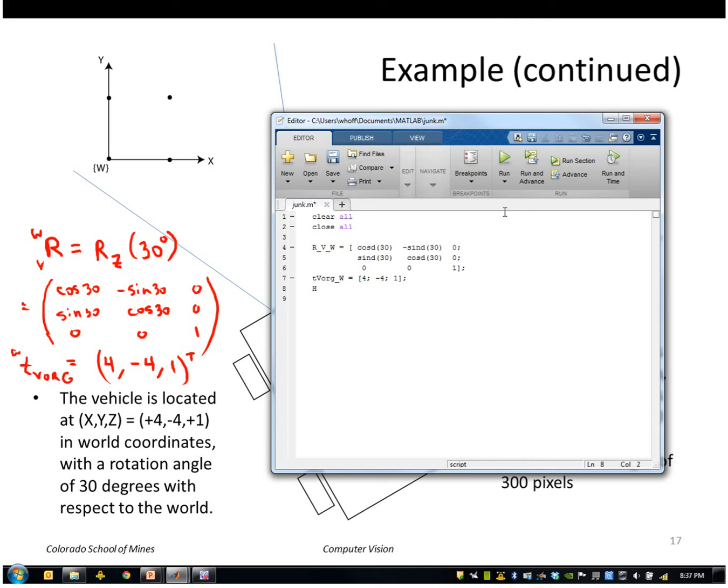So I can put those together to make my 4x4 matrix of vehicle to world. It's going to be R_vehicle_to_world, T_vehicle_origin_in_the_world, and then 0, 0, 0, 1.